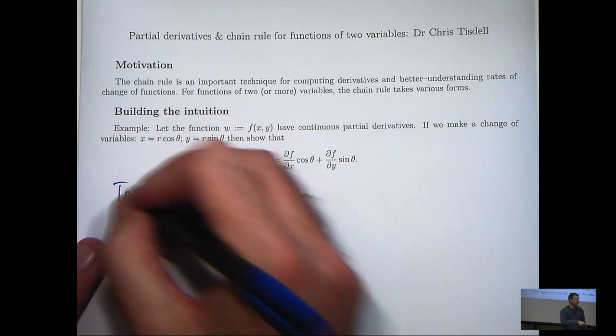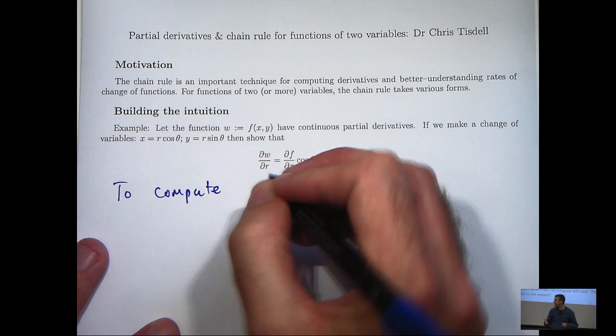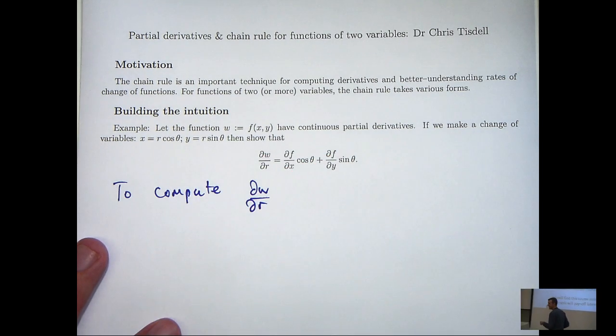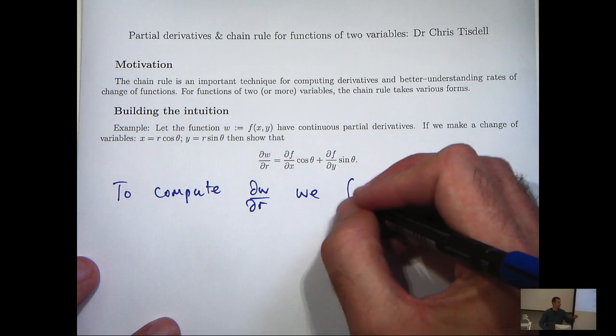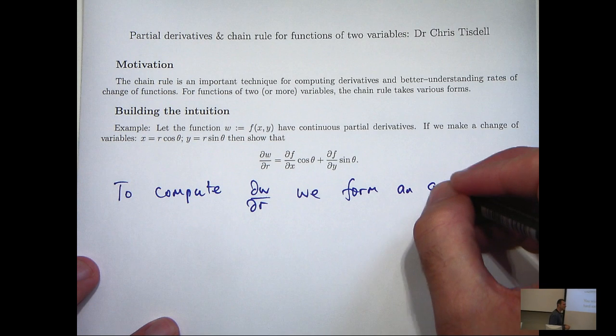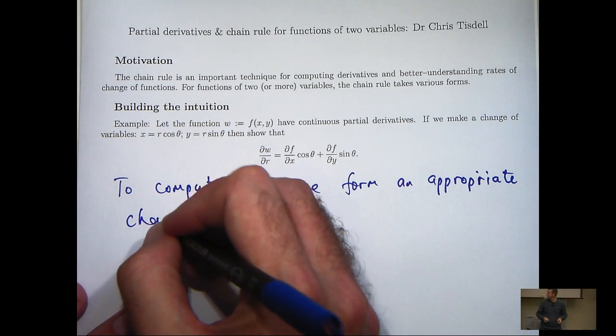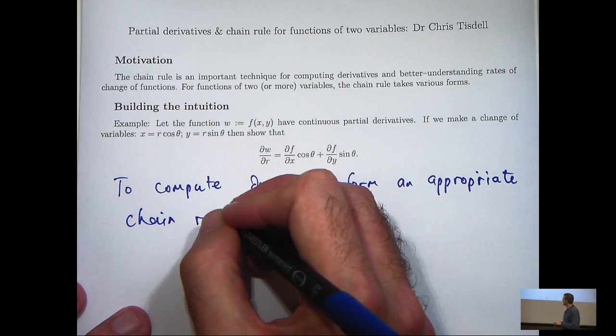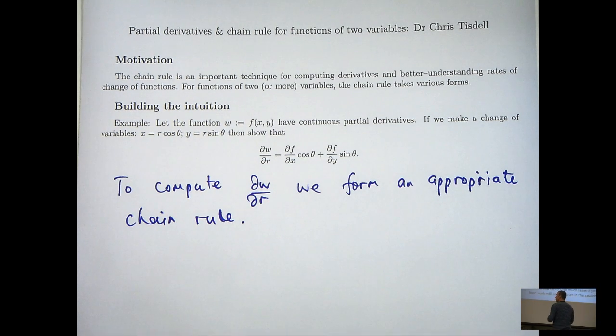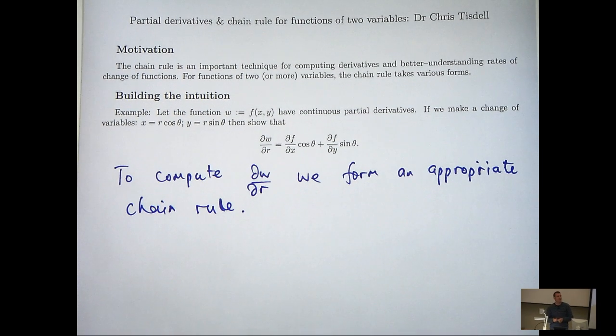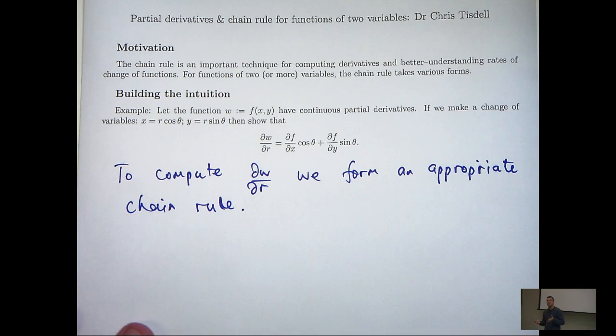To compute the derivative dw/dr, we form an appropriate chain rule. The first question is, what is the appropriate chain rule in this case for dw/dr? There are lots of formulas you can try to remember, but I like to draw a little diagram that, when used properly, can construct any chain rule. Let me show you how it works.